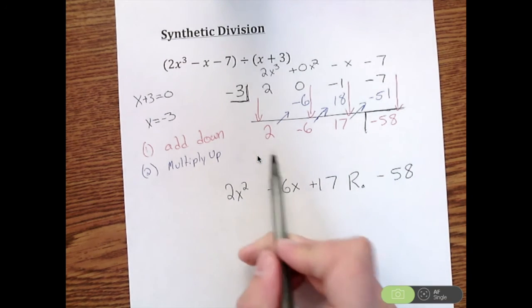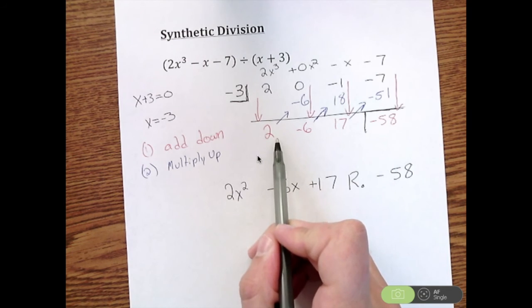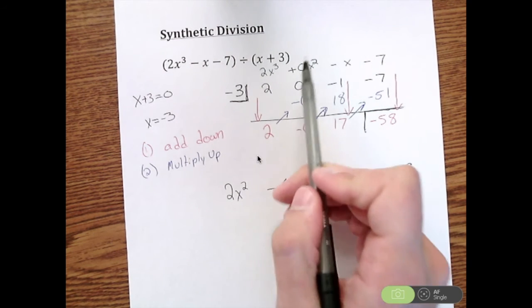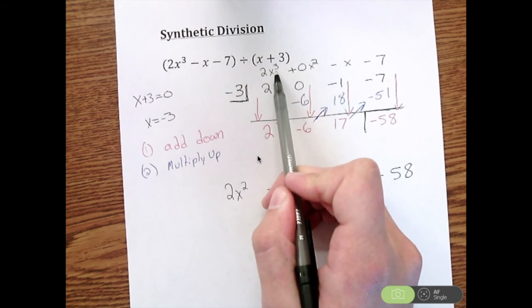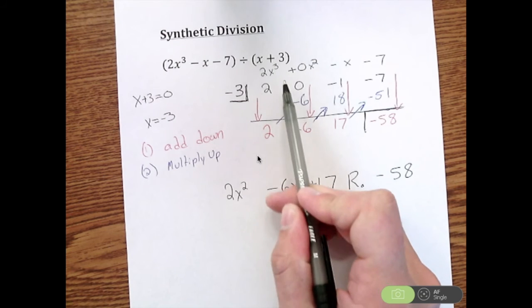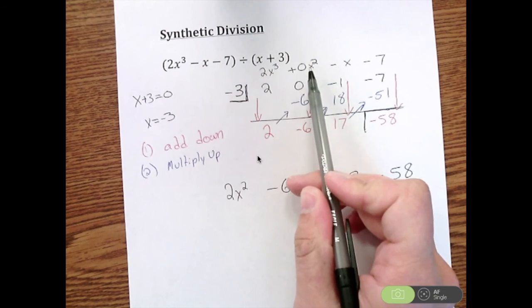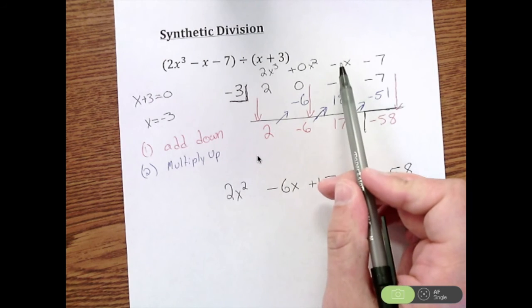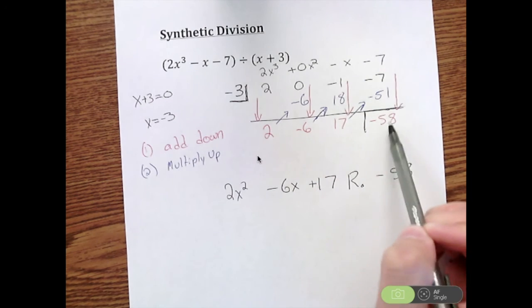Another way that you can know, well is this going to be 2x cubed, 2x to the fourth, 2x squared, 2x, is if we started with an x cubed, this is always going to be one power less. So if this is x cubed, that's going to be x squared. If this is x squared, that's x. This is x, this is your constant, there's your remainder.